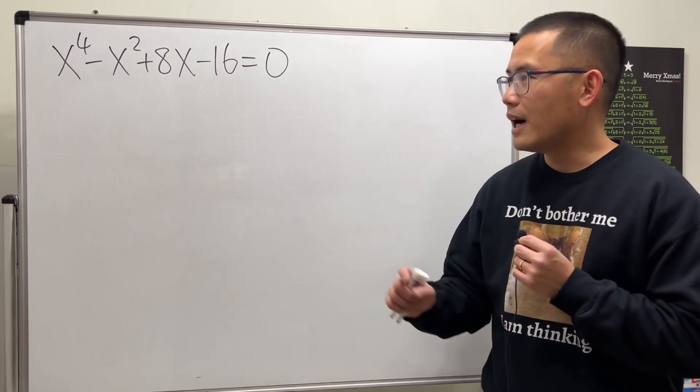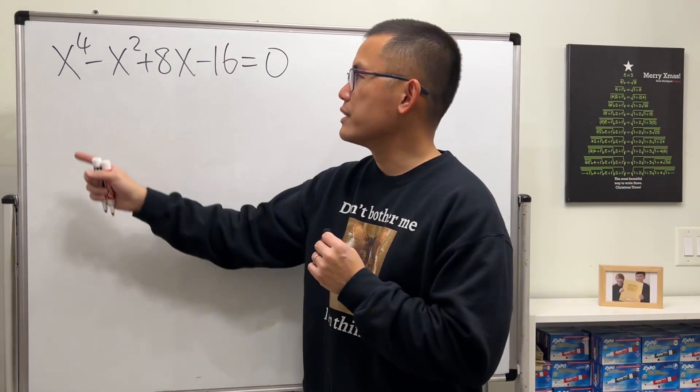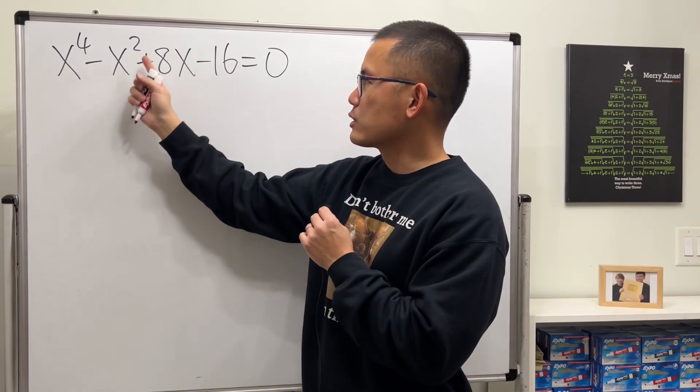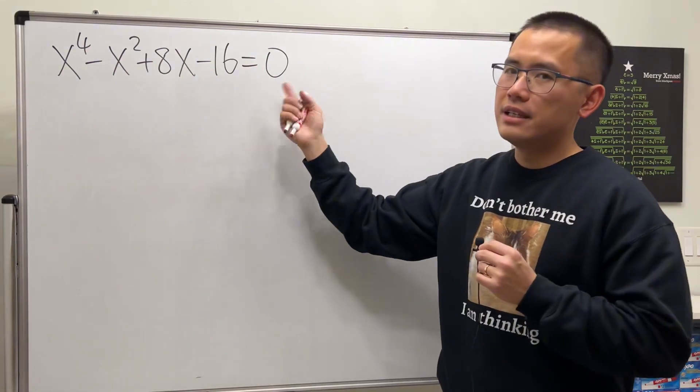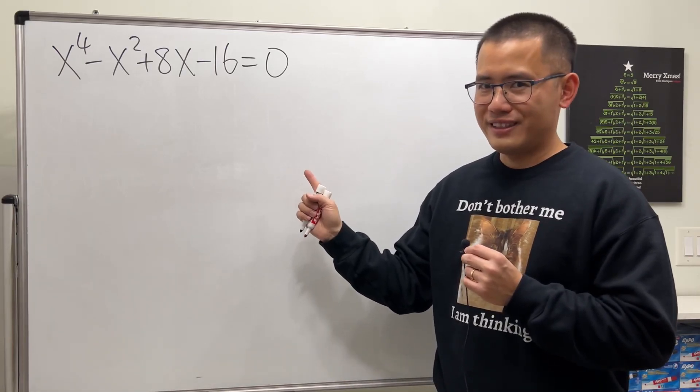Okay, today let's talk about how to solve this polynomial equation with degree 4, a quartic equation: x to the fourth power minus x squared plus 8x minus 16 is equal to 0. Well, it's actually very nice, check this out.